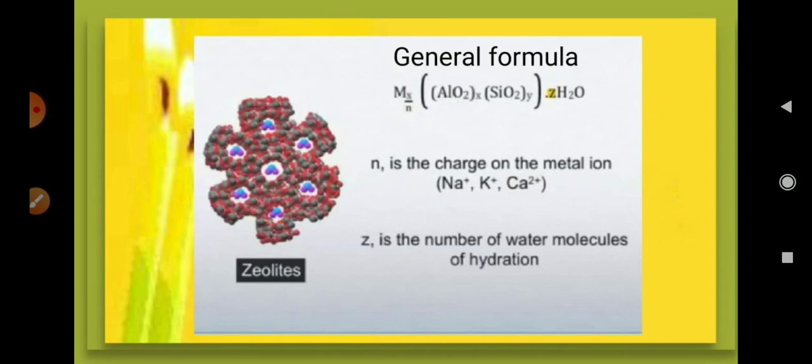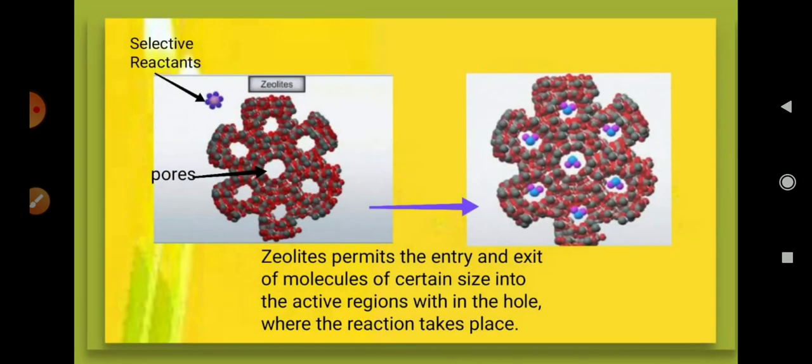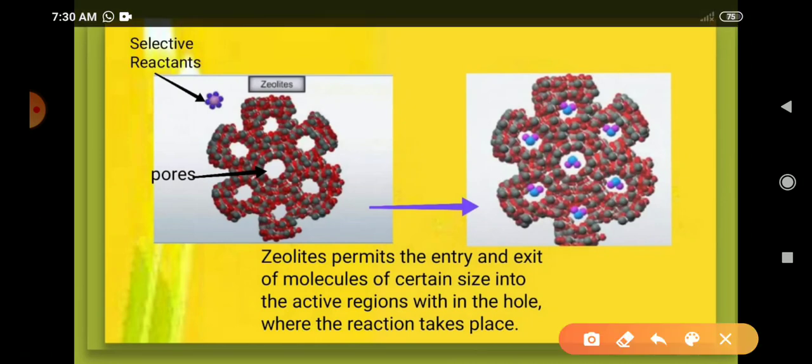Let us discuss why it is called shape-selective. In the first figure we can see the reactant molecules shown here. The pores in the zeolite are sized such that reactants of certain dimensions can get into the pores. If we have a bigger size reactant particle, for example...